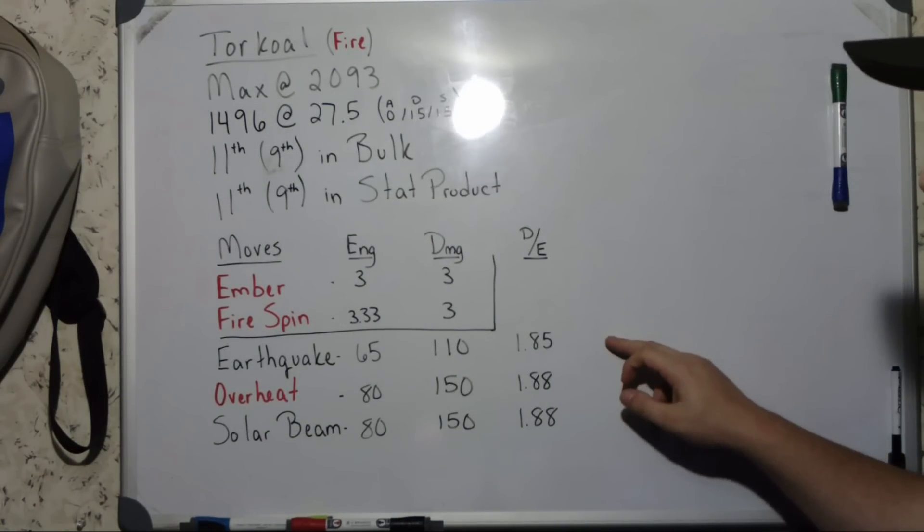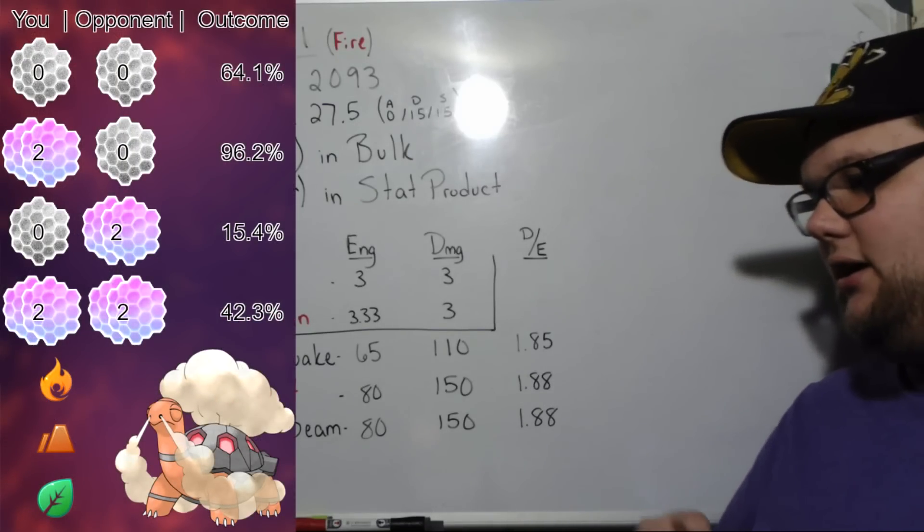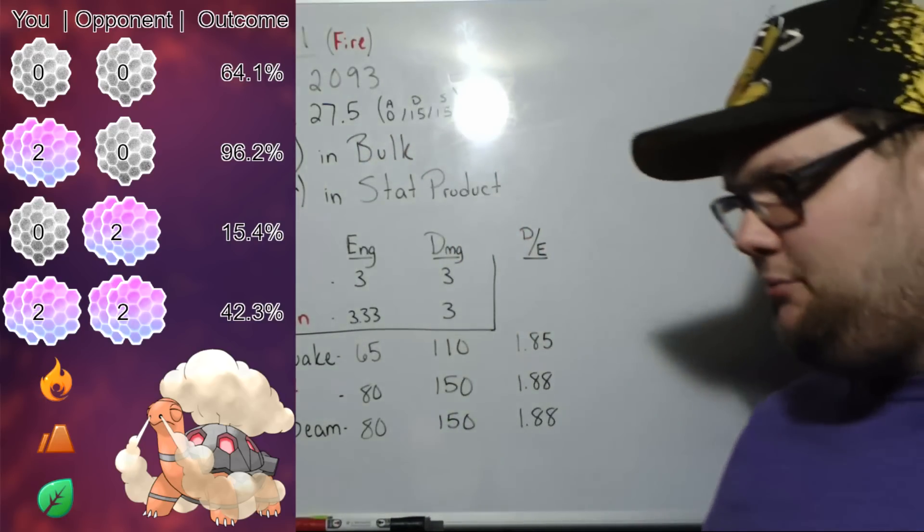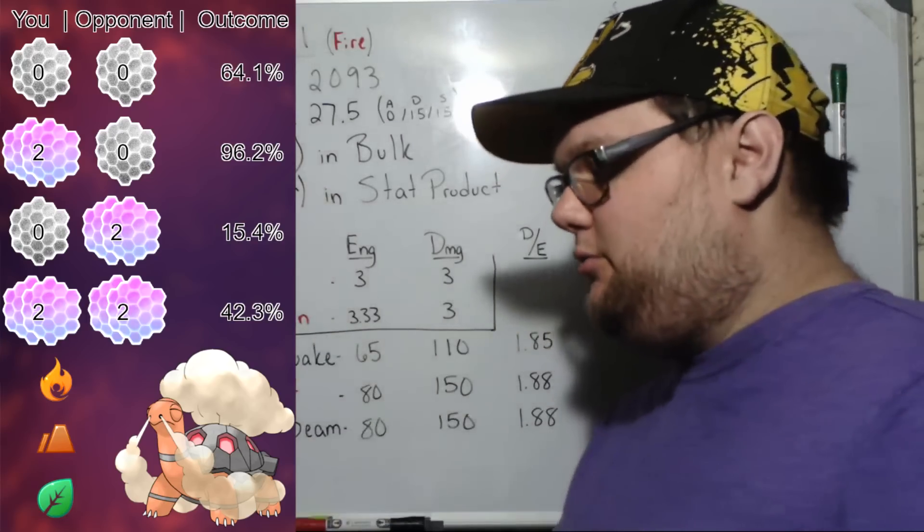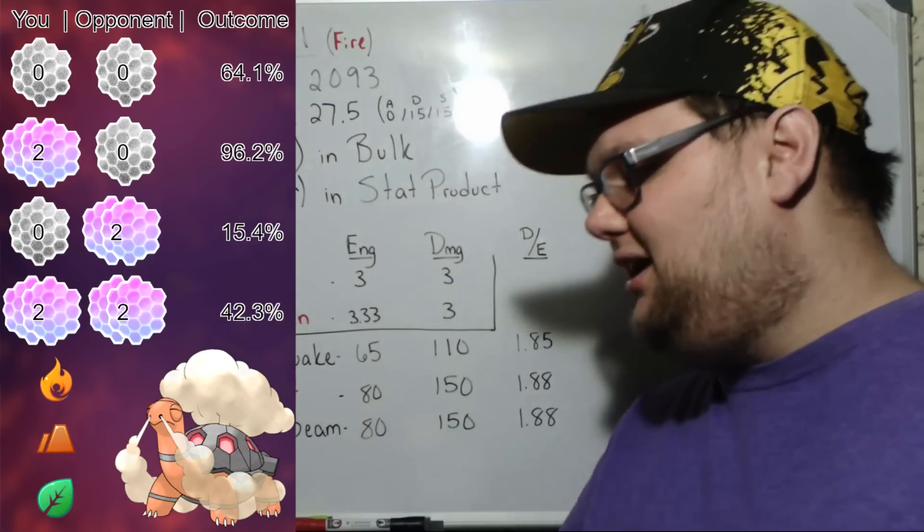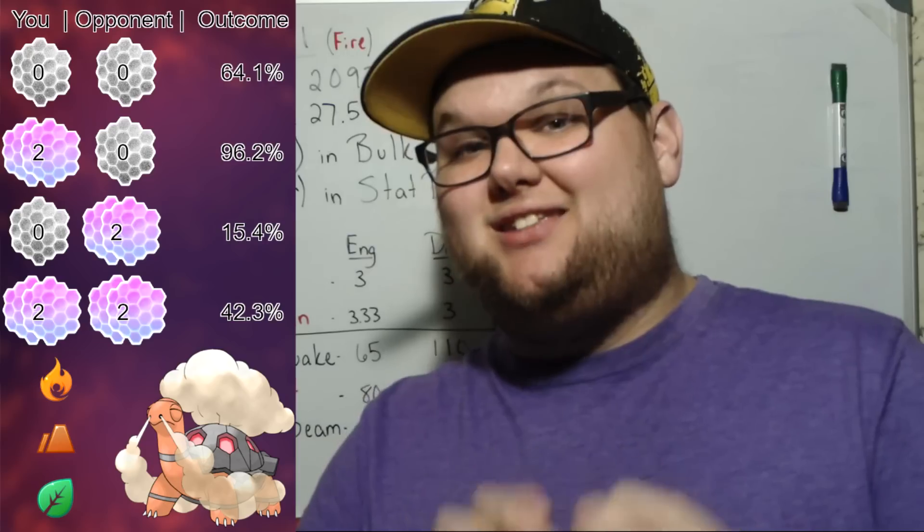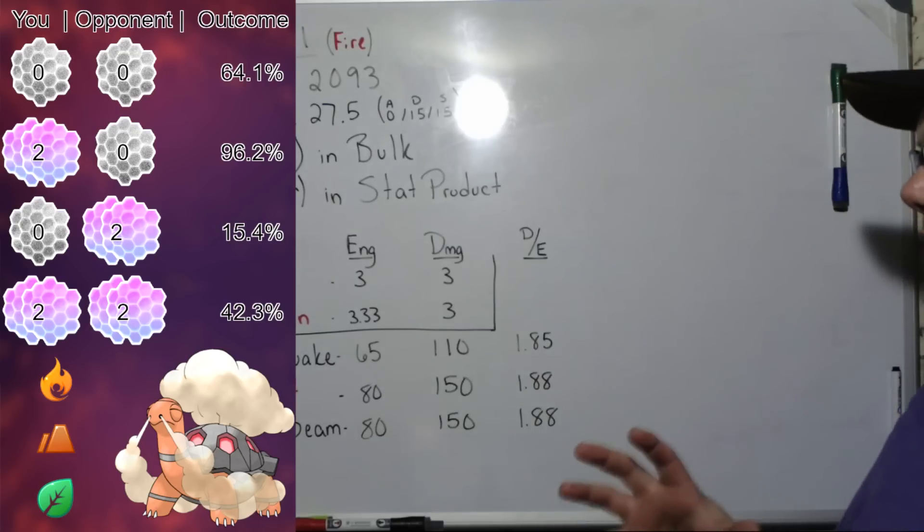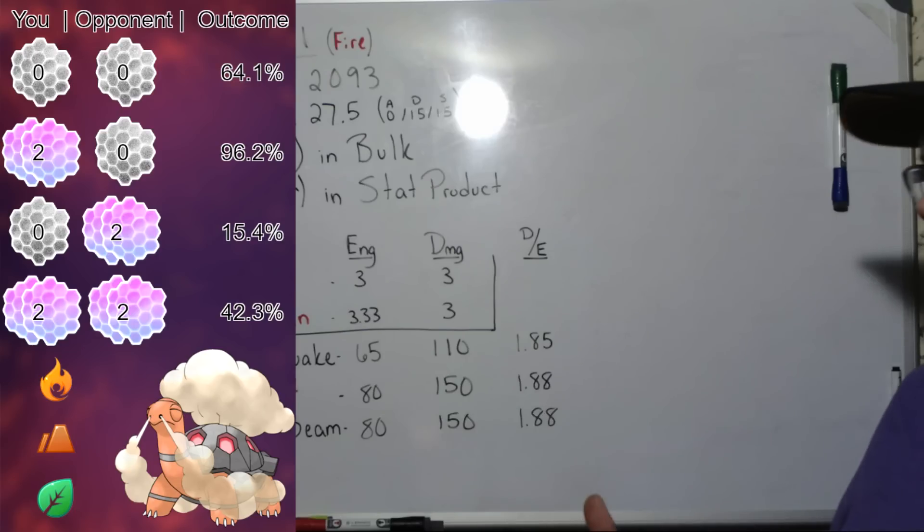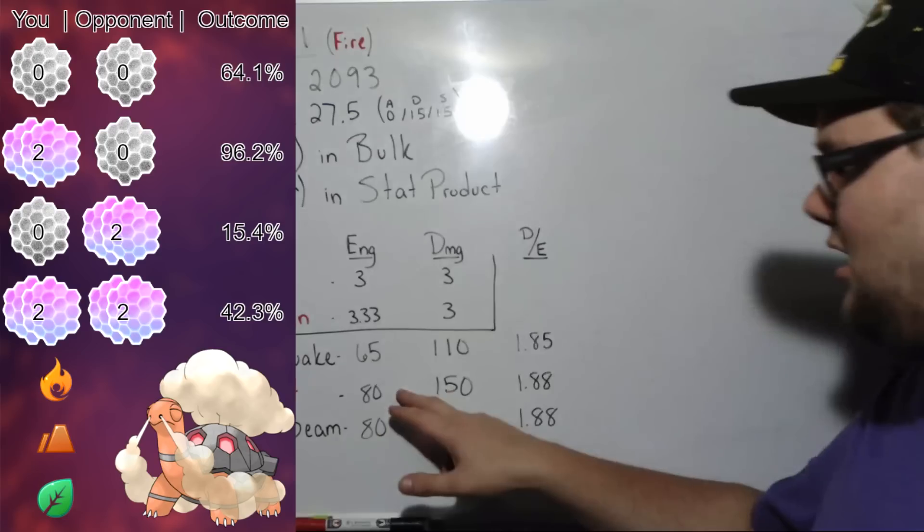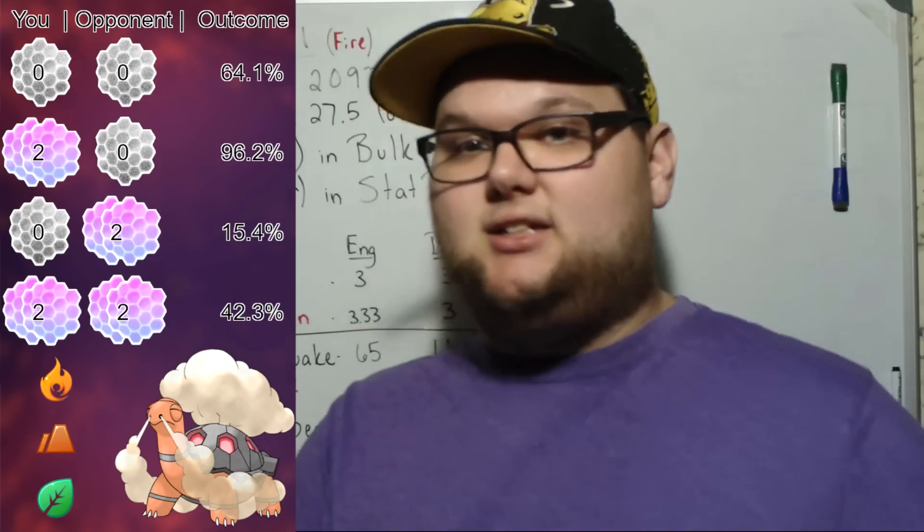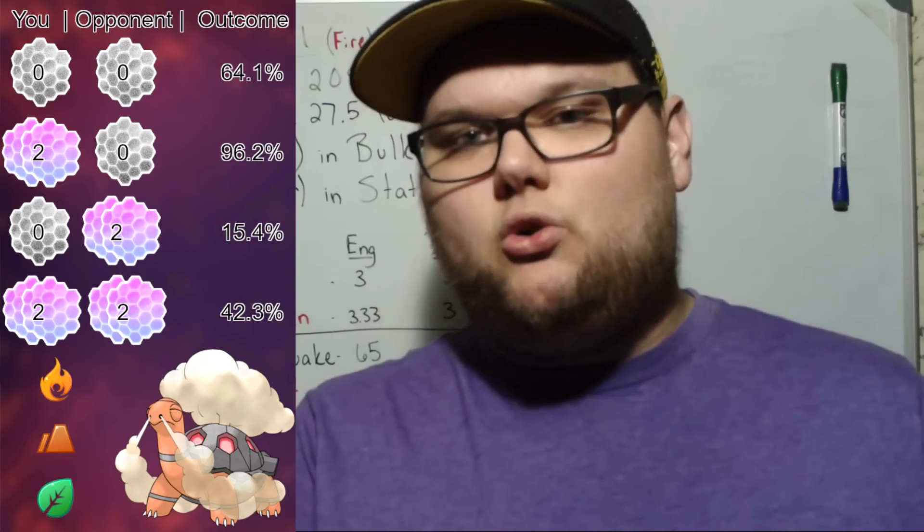Now let's take a quick look at Fire Spin, Earthquake, and Solar Beam. The big difference is that in a zero versus zero shield situation we go down to 64.1% rather than our 69.2. In our two shields versus zero shields we actually go down to 96.2%. We still end up losing to Altaria and Kingdra, and now we actually have to tie with Dragonite. But you have to remember, Solar Beam can definitely help you out in those matchups because the energy here is the same. If you're going up against a Pokemon that's going to be weak to Solar Beam and not Overheat, they perform very similarly.